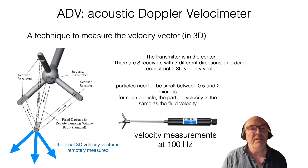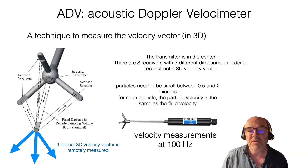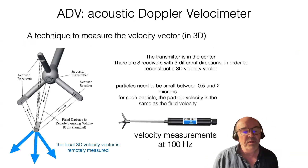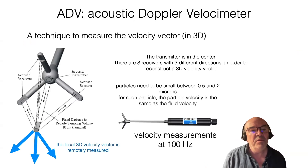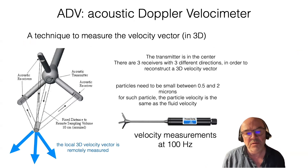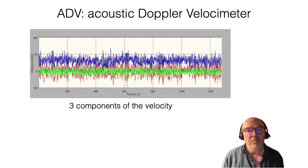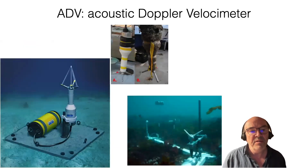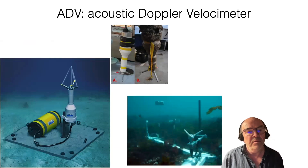This principle is used in the ADV system — the Acoustic Doppler Velocimeter. You can see here one example from the SonTek manufacturer. It provides velocity measurements at 100 Hz. A given sample volume is measured using three different receivers, which allows you to obtain the 3D velocity. So it records the 3D velocity in time at a fixed position. You can use such systems in the laboratory or in the field, for example fixed at the bottom to record velocity near the seabed.